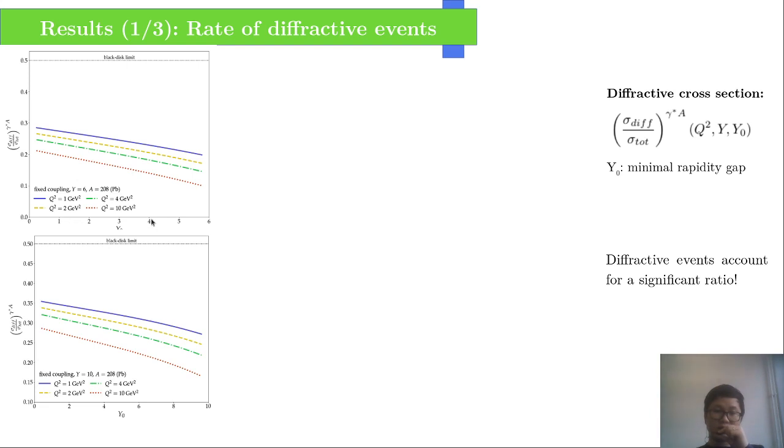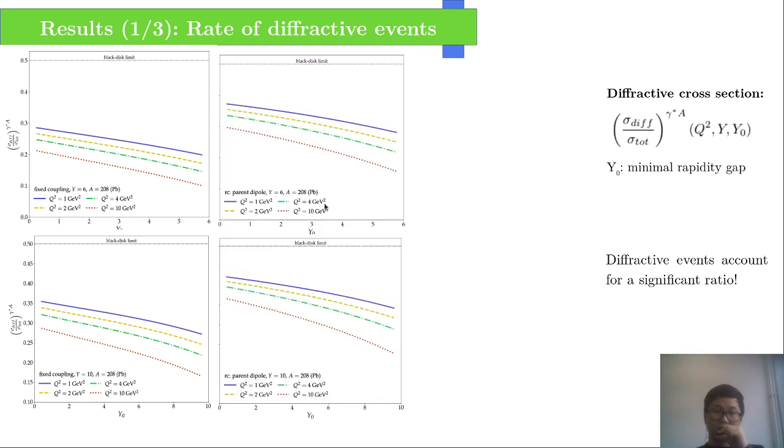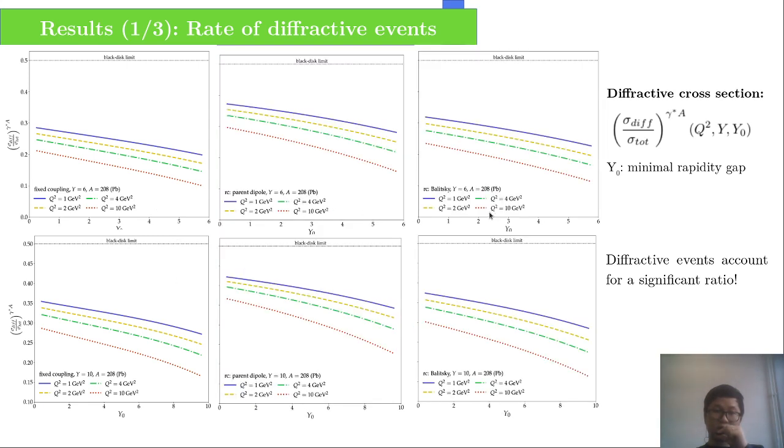Then we increase the rapidity to 10, which is accessible at LHeC, and see a bit enhancement. We then plot for the case of running coupling.